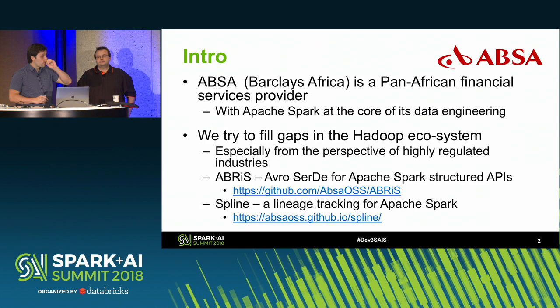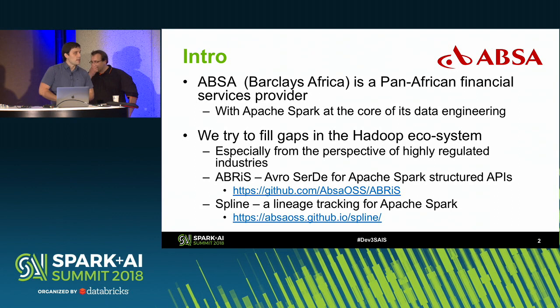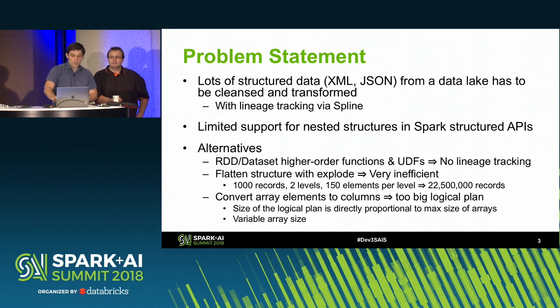So far we have open-sourced two of our projects. The first one is Abris — a simple library for serialization and deserialization of data in Avro format to entities in Spark structured APIs like data frames or data sets. The second one is Spline, a lineage tracking tool for Apache Spark, which I will touch on a little bit in our presentation.